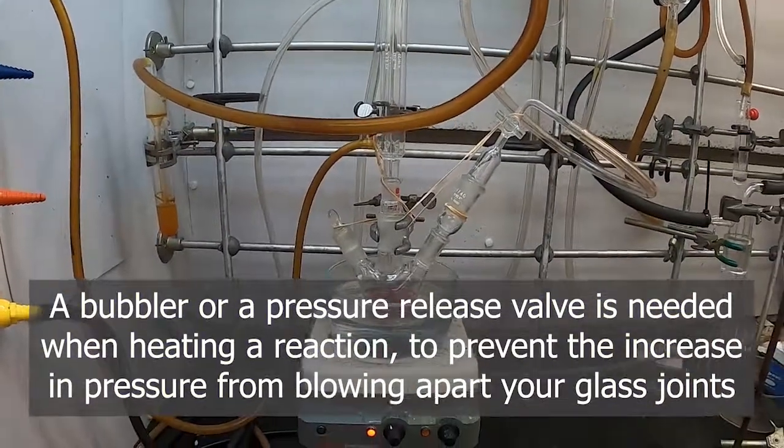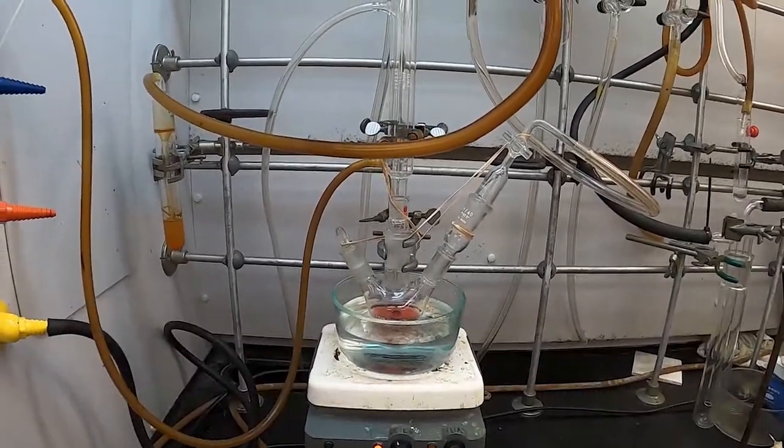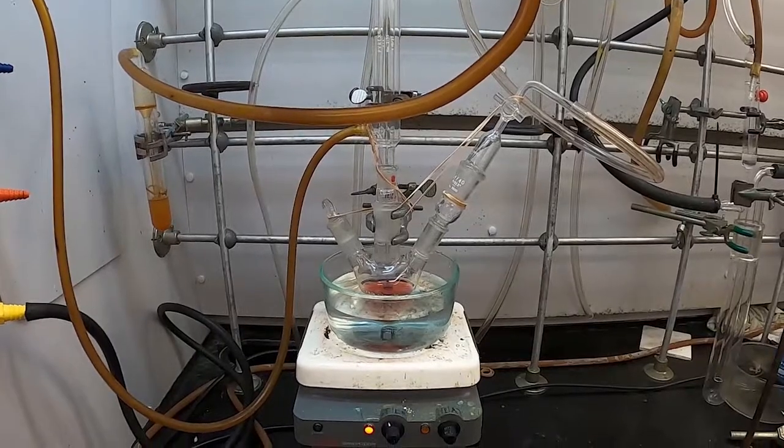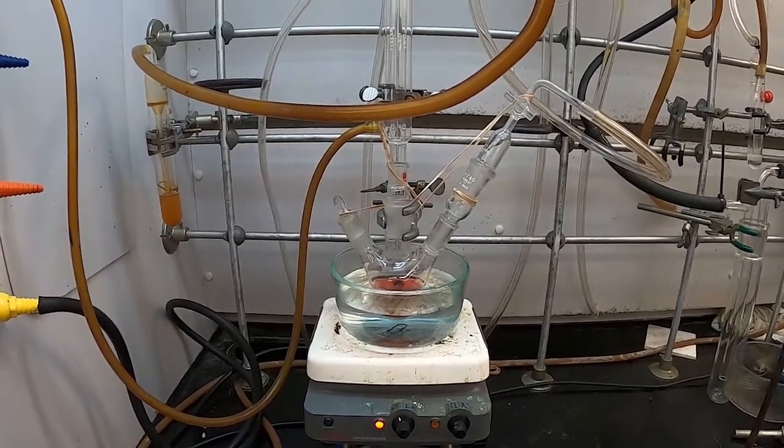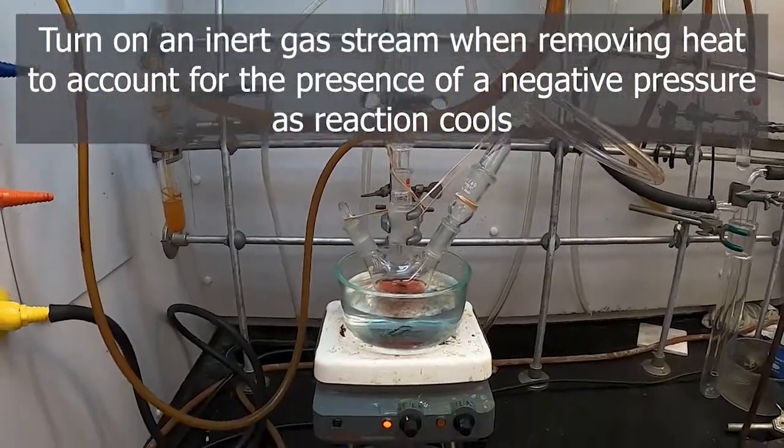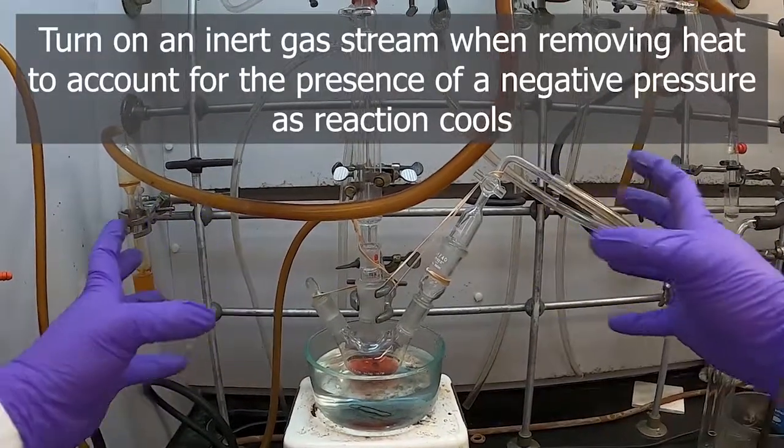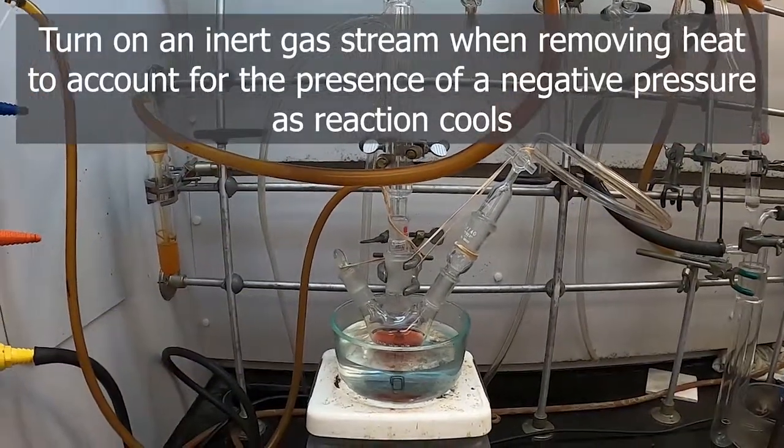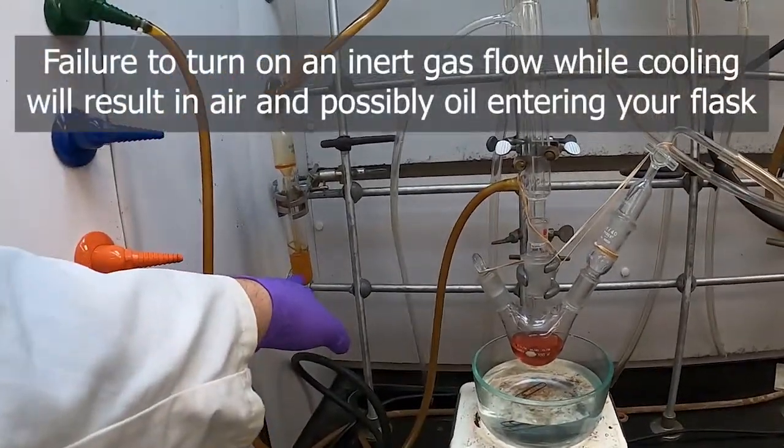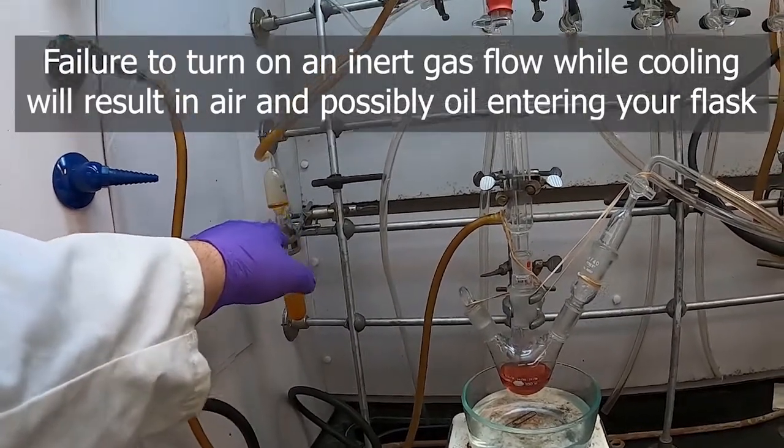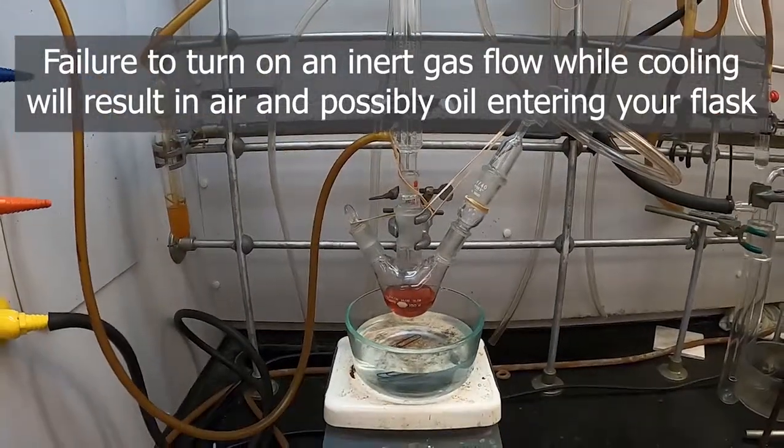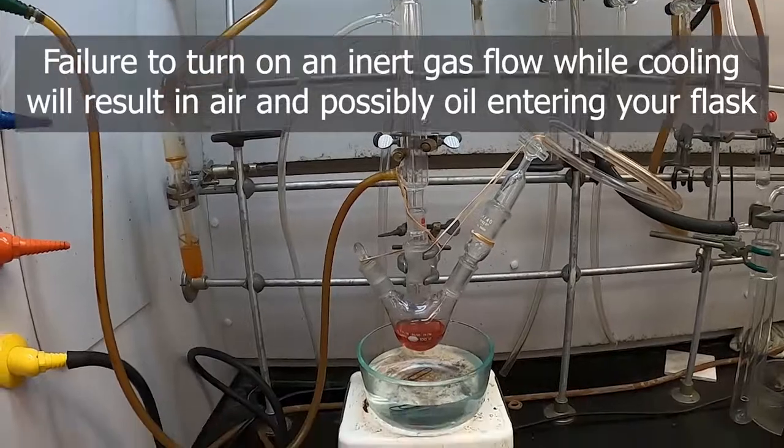We'll also want to make sure that once we lower the heat or remove the heat source and let the apparatus cool, that we engage our nitrogen flow so that as the apparatus cools and it shrinks, it doesn't bring atmosphere in with it and spoil our reaction. If we don't do that, you'll see the bubbler here will draw oil up the tube and begin to kind of pull the oil back up and try to pull it into your reaction if you have your bubbler attached but no inert gas flow as the reaction cools.